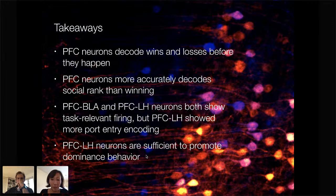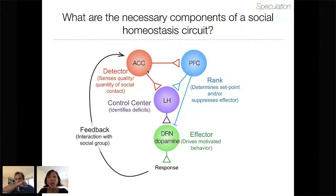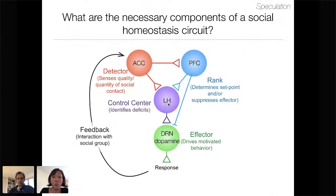We explored that and found that PFC-LH neurons are sufficient to promote dominance behavior. Based on Stephan Bhatt's cell paper in 2018, my working model is that the anterior cingulate cortex is playing a role in the detector system. It's possible that these components of the functional circuit don't sit tightly in one brain region — some oversimplification. We think that rank is represented in the PFC, and this information is being sent to the control center, which identifies deficits. We have a lot of evidence that LH neurons synapse robustly onto DRN dopamine neurons, making this a perfectly poised circuit to be our social homeostatic circuit.